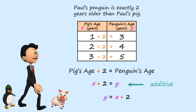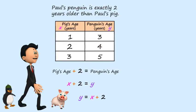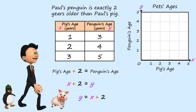Now, let's put this information on a graph. Our first point: X equals one, Y equals three — that's one in the X direction and three in the Y direction. Then we have X equals two, Y equals four — that's two in the X direction and four in the Y direction. And lastly, we have three and five.